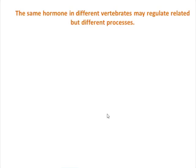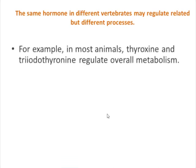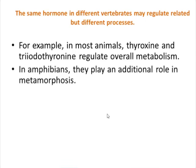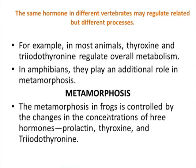Hormones in different vertebrates may regulate related but different processes. For example, in most animals thyroxin and triiodothyronine regulate overall metabolism such as growth and metabolic rate. In amphibians, they play another important role: metamorphosis. In frogs, metamorphosis is controlled by changes in the concentration of three hormones — prolactin, thyroxin, and triiodothyronine.